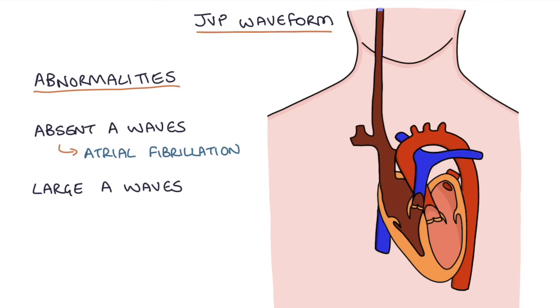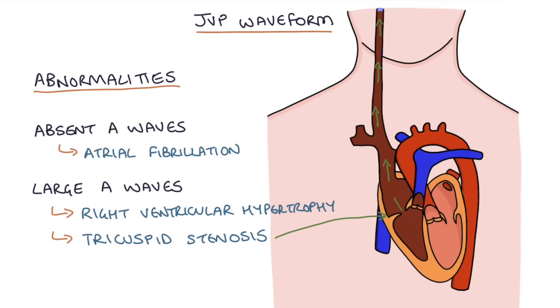Large A waves can be caused by anything that makes flow from the right atria to the right ventricle more difficult, because the atria will be contracting against resistance, and this will cause more blood to flow upwards if it can't flow downwards. Therefore, this would be caused by right ventricular hypertrophy, which could be caused by pulmonary hypertension or pulmonary stenosis, or it could be caused by tricuspid stenosis. Both of these will cause large A waves.